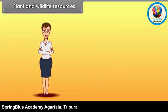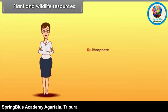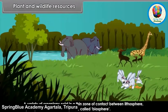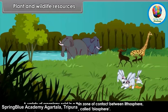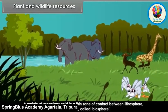Plant and Wildlife Resources. Do you know which are the spheres of the earth? They are the Lithosphere, Hydrosphere, Atmosphere and Biosphere. Among these spheres, Biosphere is the narrow sphere where life exists. A variety of organisms exist in a thin zone of contact between lithosphere, hydrosphere and the atmosphere, called the biosphere.